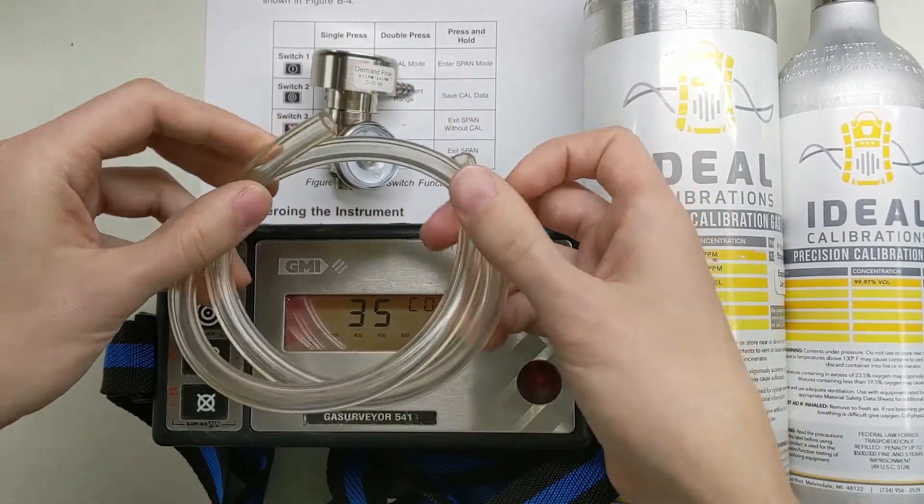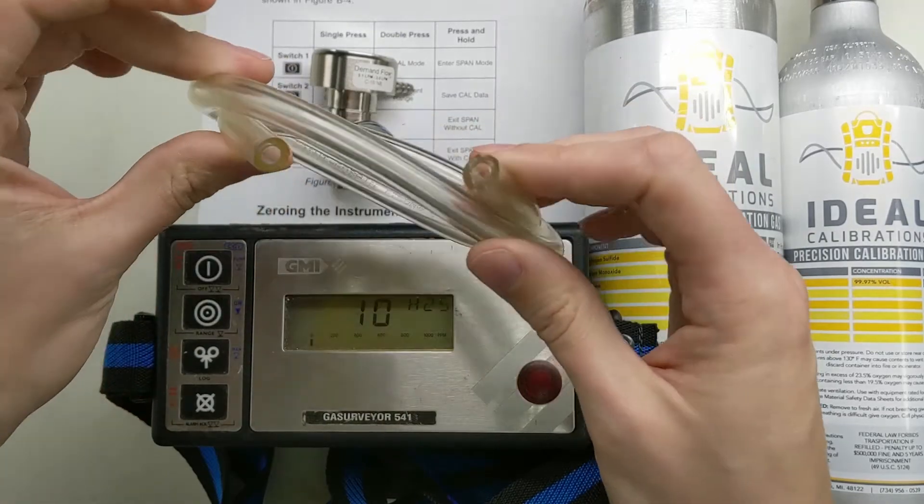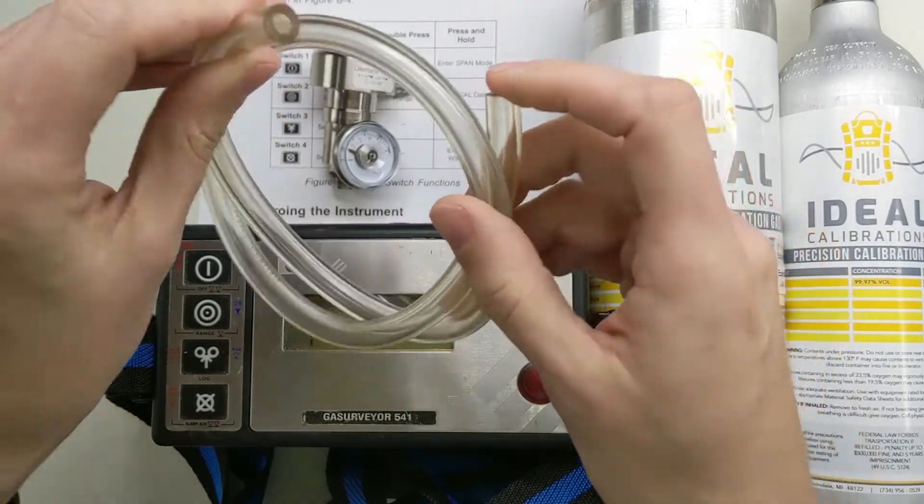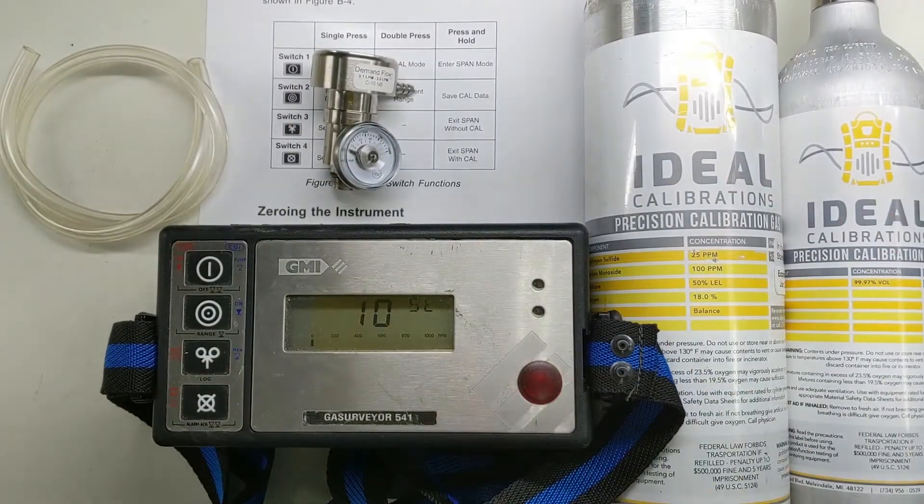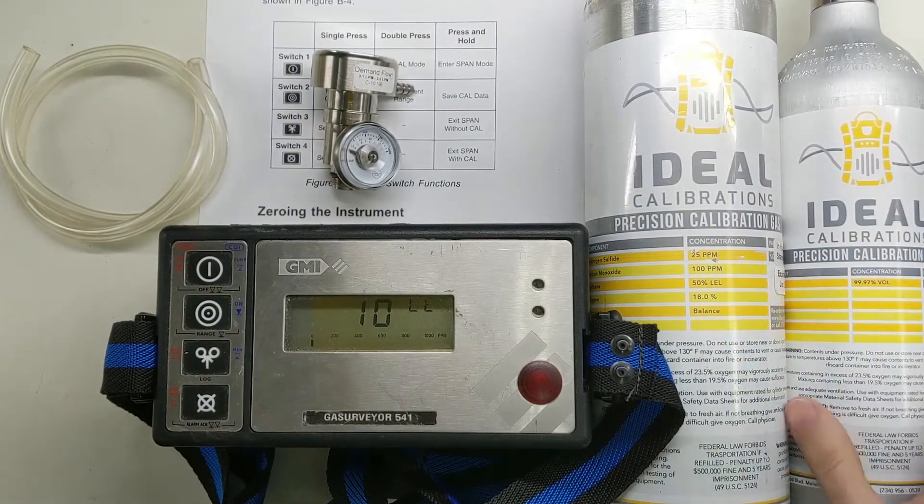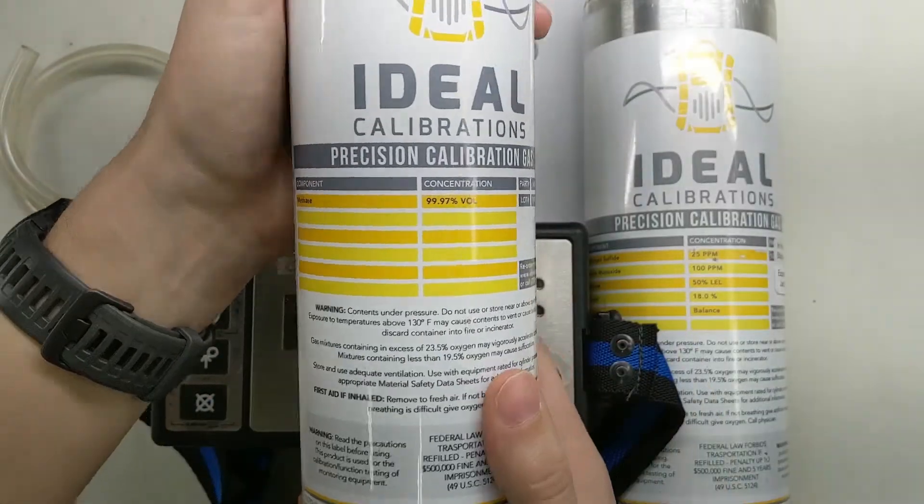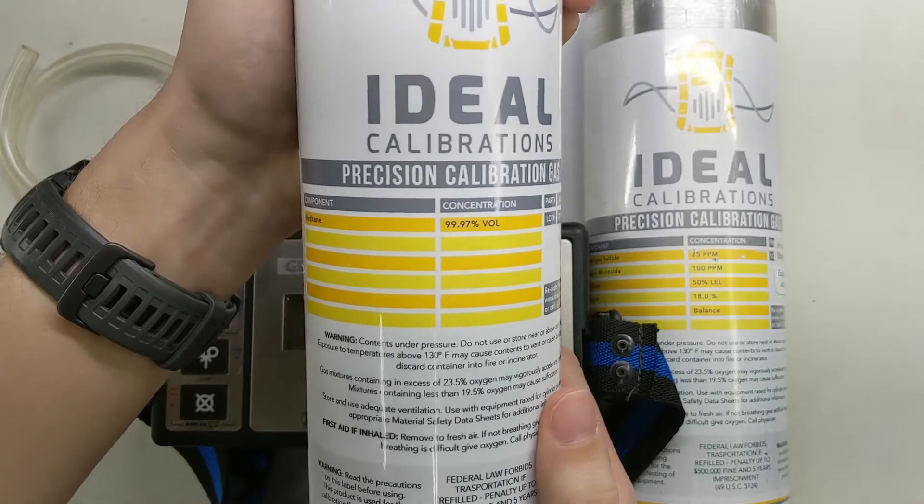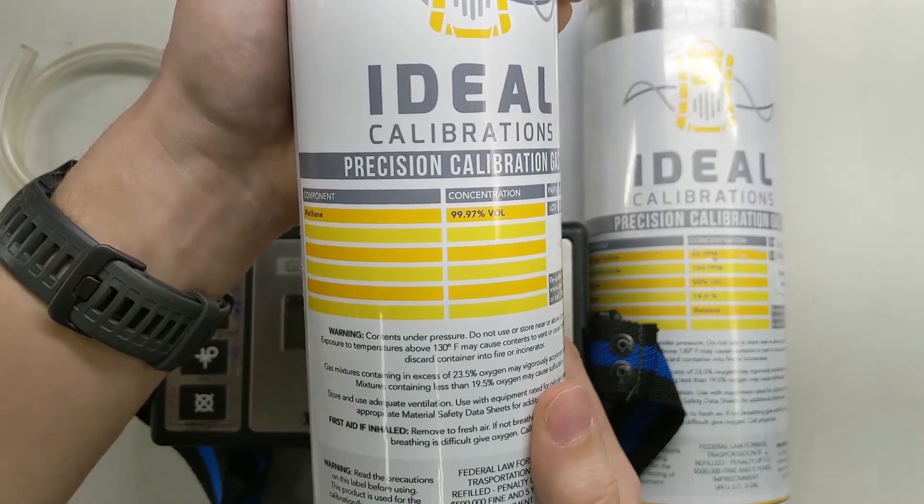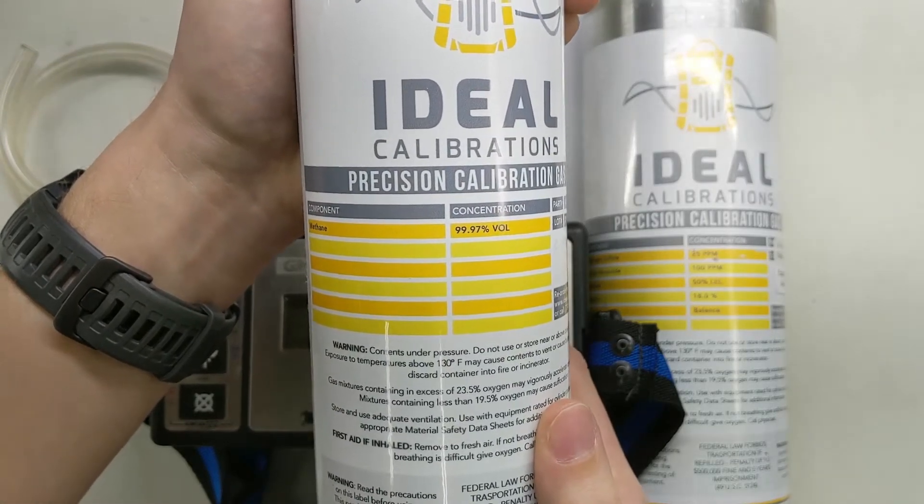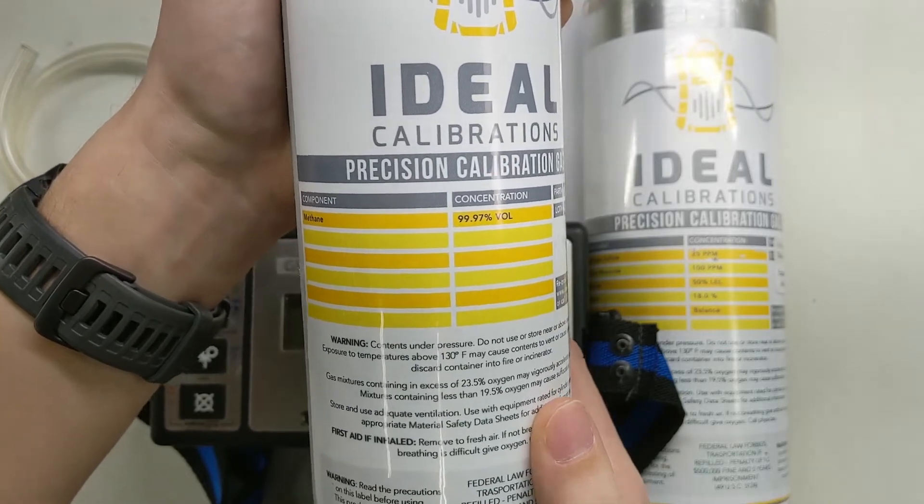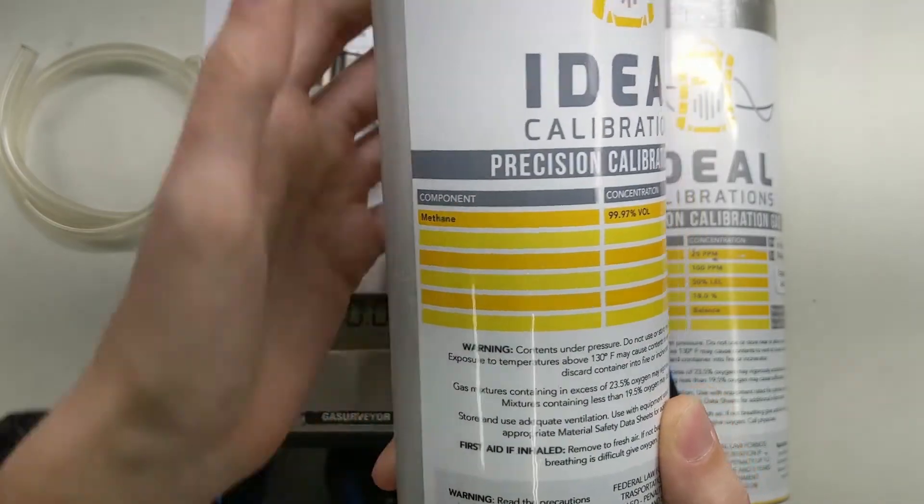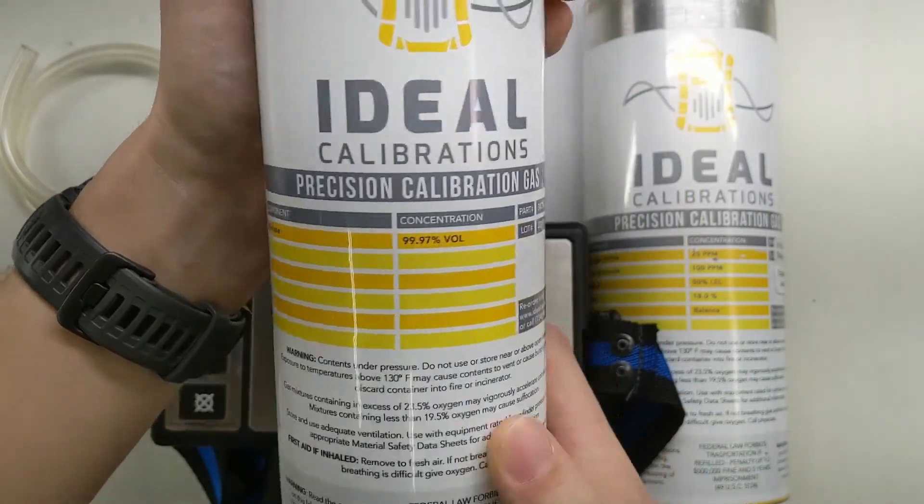Got some tubing. This tubing is a little thicker than the other tubing you'll see us use. This is a 3-16th instead of a 1-8th inch ID. And we've got two cylinders of cal gas here. We have a UHP methane. This is 99.97% by volume. We recommend getting the best you can.